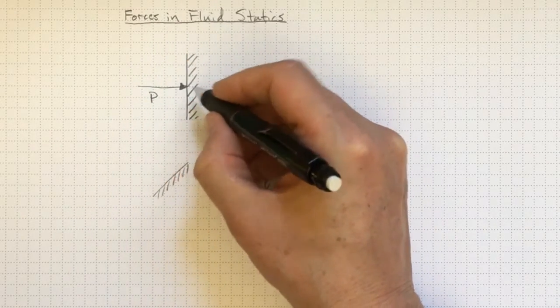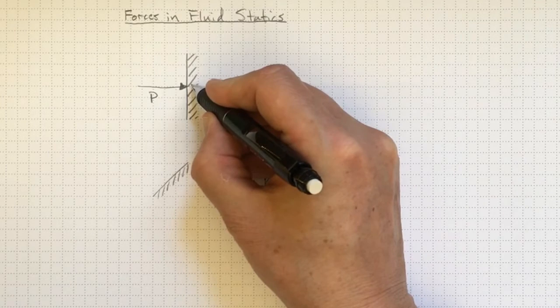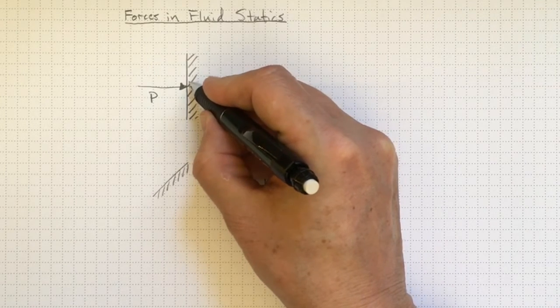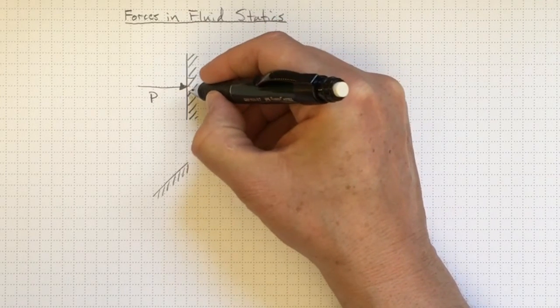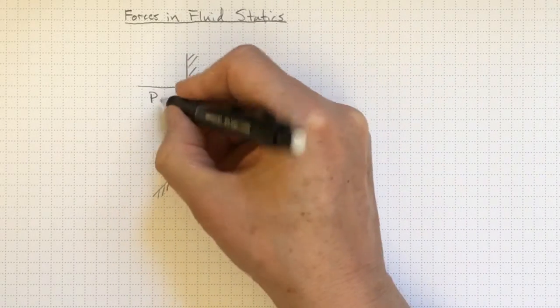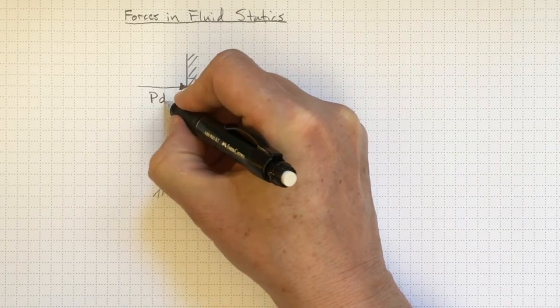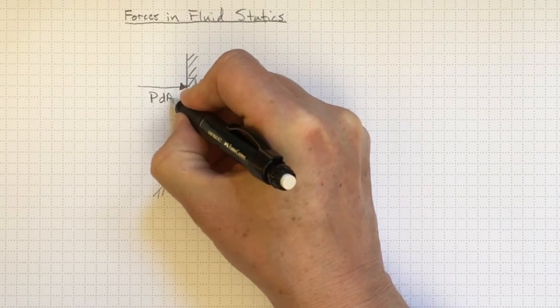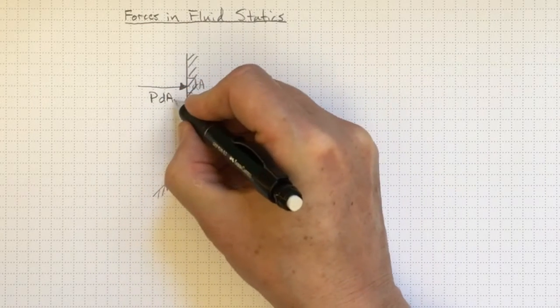The resulting force would depend on the size of the area that it was pushing on. So if I look at just a little small area there, dA, then this will be the pressure times dA. So pressure times area gives me a force.